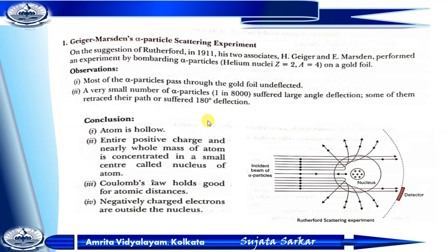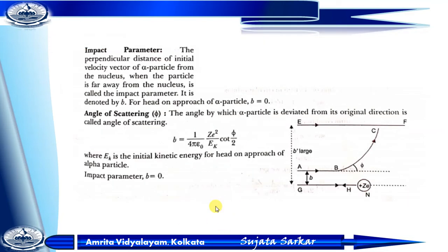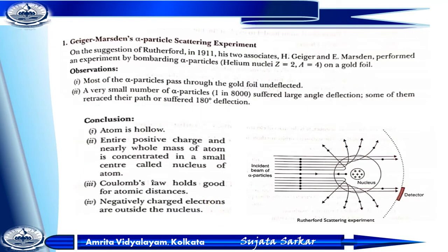The conclusion is: the atom is hollow. The entire positive charge and nearly the whole mass of the atom is concentrated in a small central nucleus. Negatively charged electrons are outside the nucleus. According to Coulomb's law, it holds good for atomic distances.